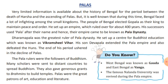Dharmapala was the greatest ruler of the Pala dynasty. He set up a center of Buddhist education known as Vikramshila Vihar. His son Devpala extended the Pala empire further, and after his reign the Pala empire declined. Pala rulers were followers of Buddhism and sent many scholars to distant countries to spread Buddhism, like Ashoka and Kanishka. They also gave grants and charity to Brahmins to build temples.